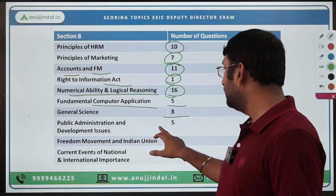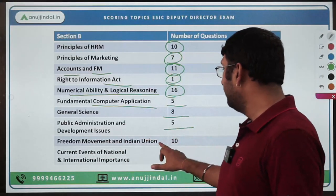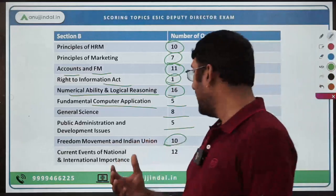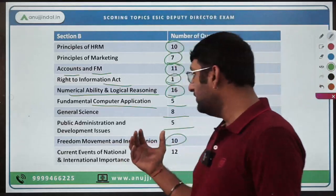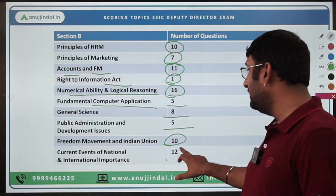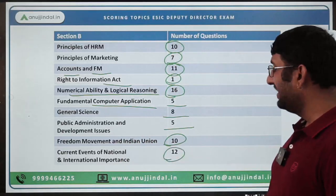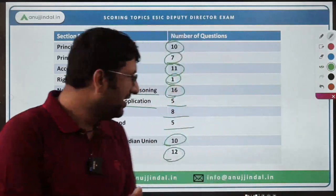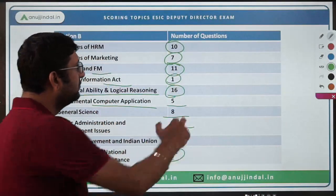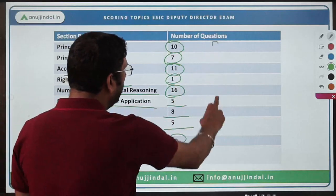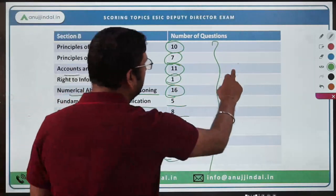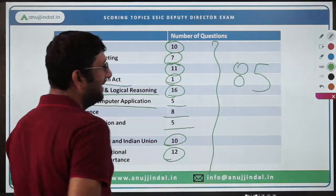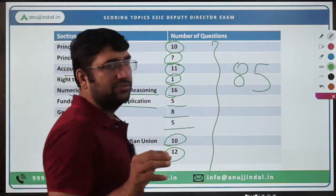Public Administration and Development Issues has 5 questions. Freedom Movement and Indian Union — basically from the historical aspects — has 10 questions. Last but not the least, Current Events from a national as well as international perspective has a weightage of 12 questions. This broad weightage sums up to 85 questions from Section B and 15 questions from English — a total of 100 questions from 10 topics.